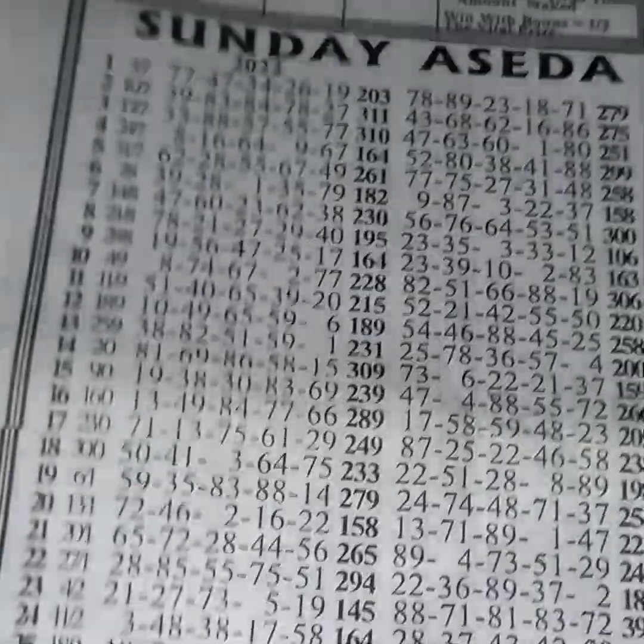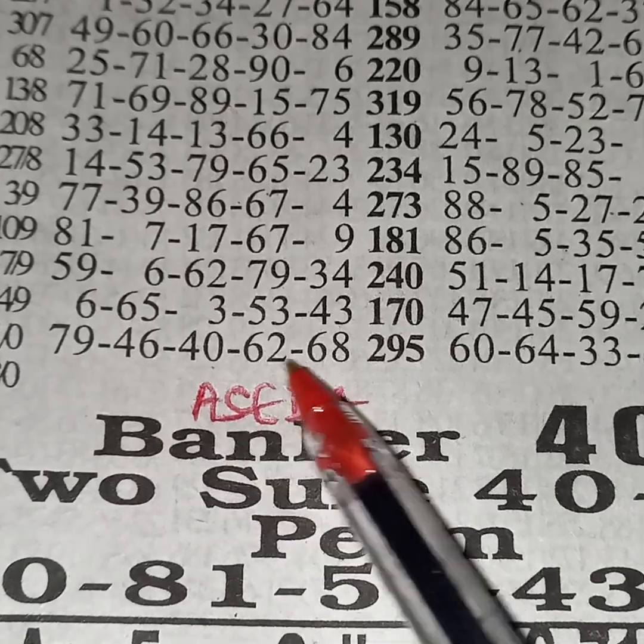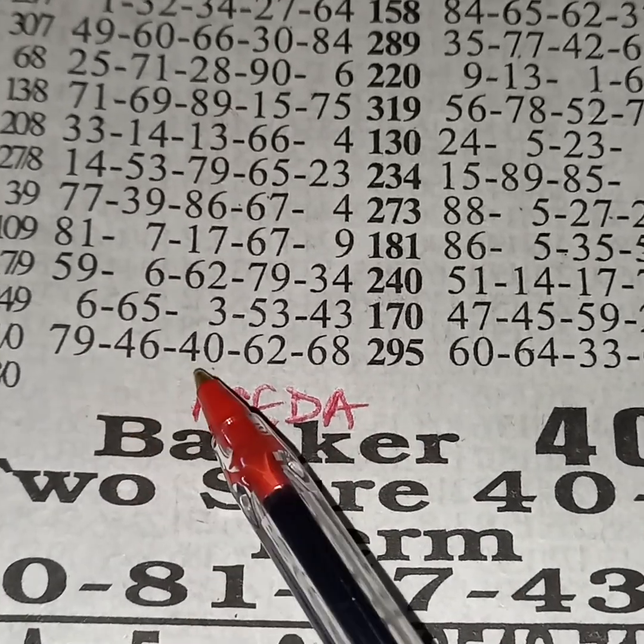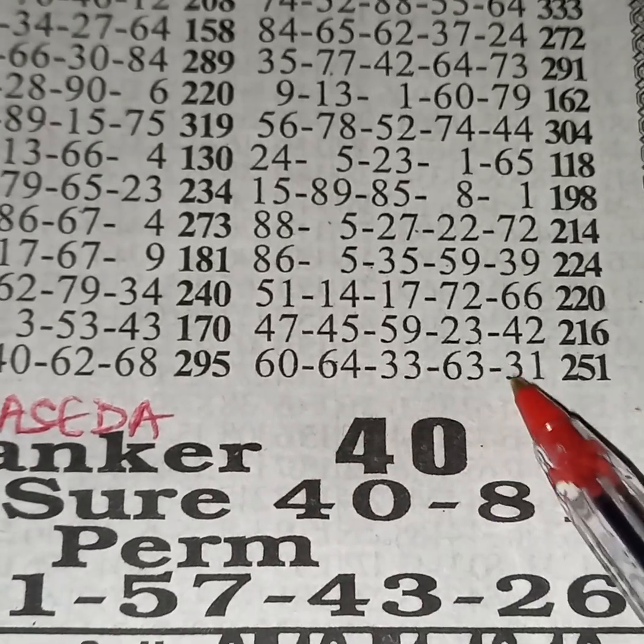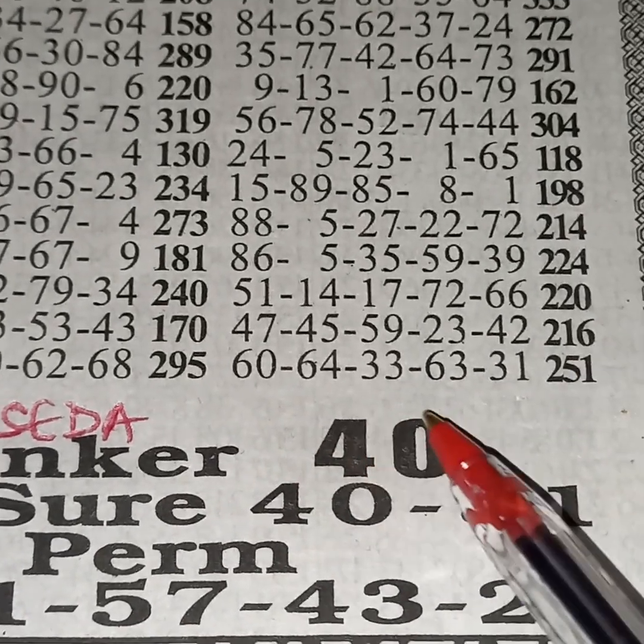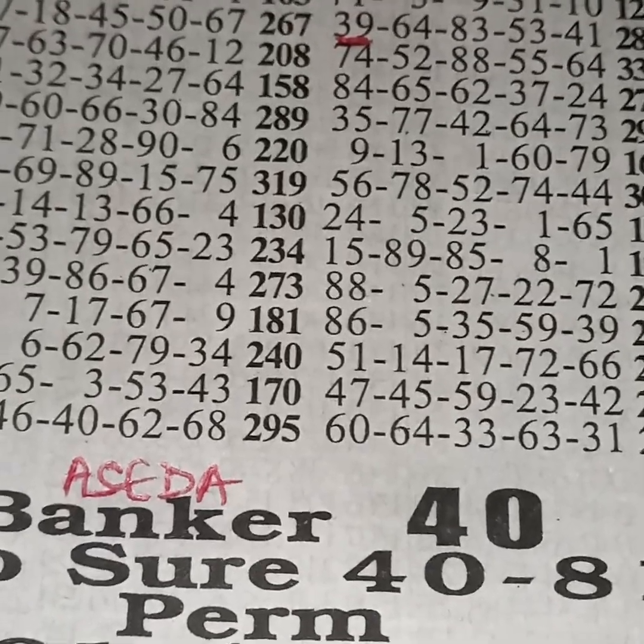Date: 8 October 2023. Last week's winning numbers were 79, 46, 40, 62, 68. Last week's machine numbers were 60, 64, 33, 63, and 31. Our Sunday Asada game is transferred from midweek.